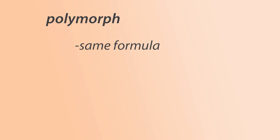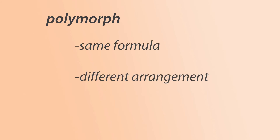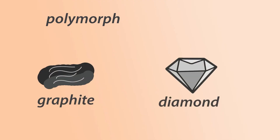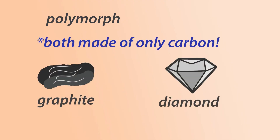Pseudomorphs aren't to be confused with polymorphs, which are minerals with the same chemical formula but different atomic arrangements. The most commonly used example of this is graphite and diamond, since they're both made of pure carbon, but the different arrangements lead to their different properties. Graphite is more slippery since it's arranged in sheets, while diamond is stronger because of its tetrahedral form. The last video covers this, so here's a link to that.